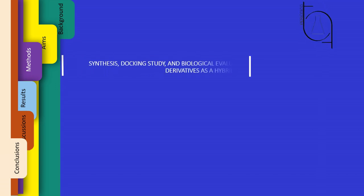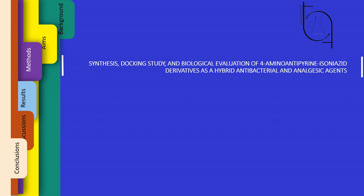The manuscript, synthesis, docking study, and biological evaluation of 4-aminoantipyrene isoniazid derivatives as hybrid antibacterial and analgesic agents came from Iraq. It was written by Abir Esa Mohamed, Mandir Abdul Jalil Mohamed Ali, and Eklis Canberjasm.